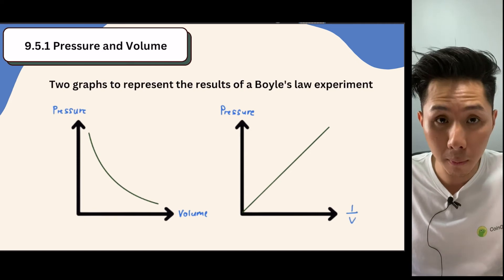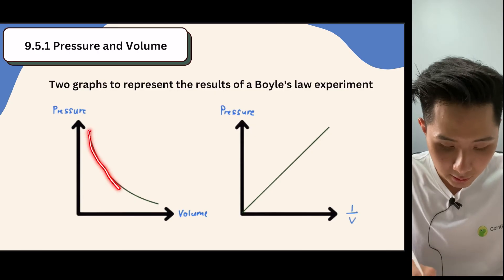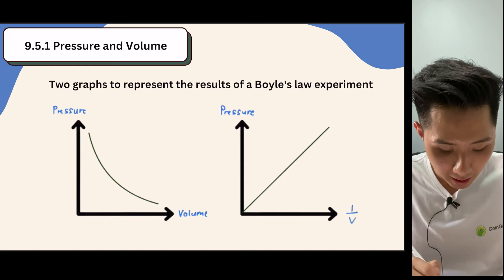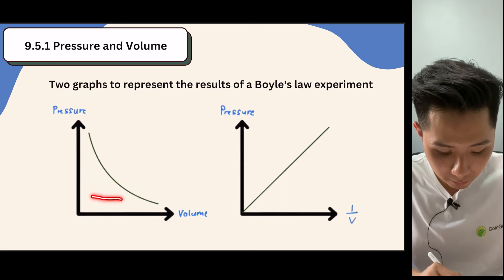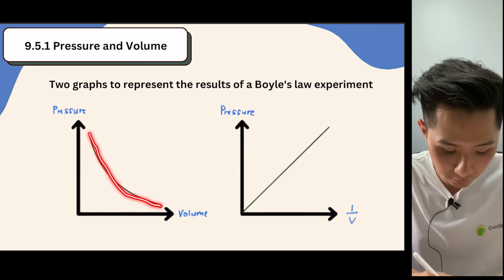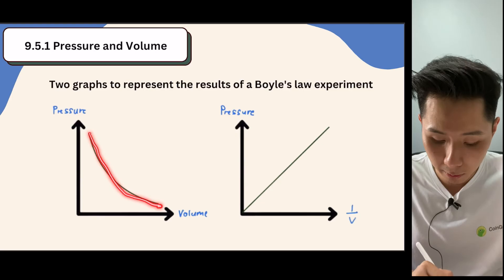And if we look at the graph of Boyle's Law, you can see that as volume decreases, pressure increases. But if you increase the volume instead, pressure will decrease. There's an inverse relationship on them. But if you were to use 1 over volume instead of volume, you would have gotten this straight line graph instead.